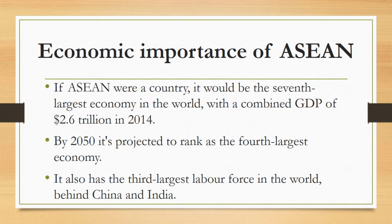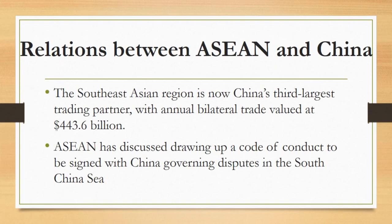If ASEAN were a country, it would be the seventh largest economy in the world, with a combined GDP of 2.6 trillion dollars in 2014. By 2050, it is projected to rank as the fourth largest economy. Home to more than 622 million people, the region has a larger population than the European Union or North America, and it also has the third largest labor force in the world, behind China and India.